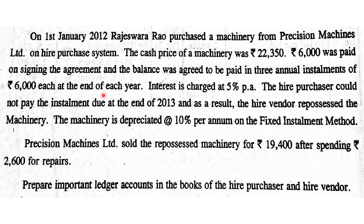Now we can explain a question. On 1st January 2012, Rajeshwaru Rao purchased a machinery from Precision Machines Limited on the hire purchase system. The buyer is Rajeshwaru Rao; the vendor is Precision Machines. The cash price was ₹22,350. ₹6,000 was paid on signing the agreement, and the balance was agreed to be paid in 3 annual installments of ₹6,000 each. Interest is charged at 5% per annum.